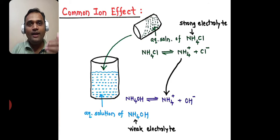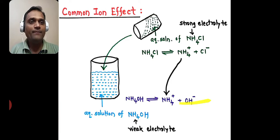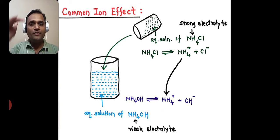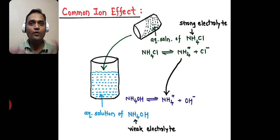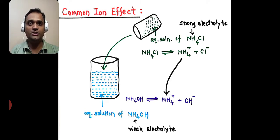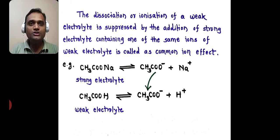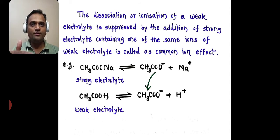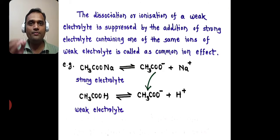Initially it gets ionized, but as it receives that NH4+ ion, the NH4+ combines with OH− and again forms NH4OH. Overall, it is the suppression or decreasing of the dissociation of ammonium hydroxide. The dissociation or ionization of a weak electrolyte is suppressed by the addition of a strong electrolyte containing one of the same ions of the weak electrolyte. This is called the common ion effect.